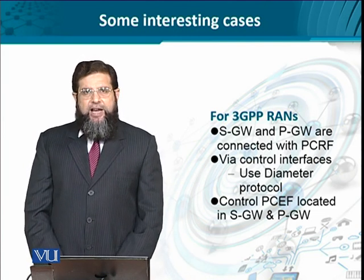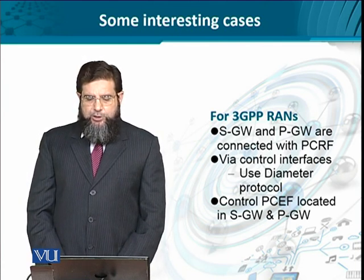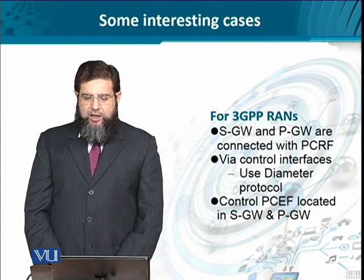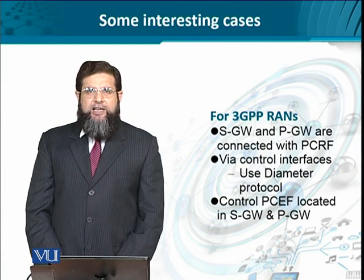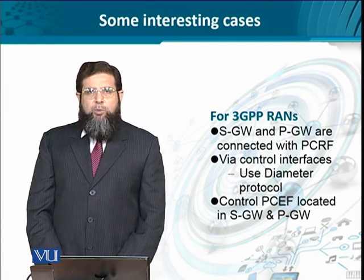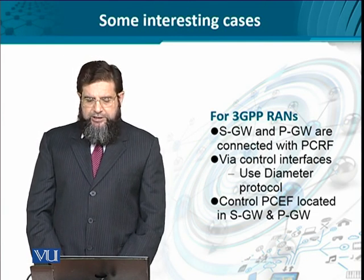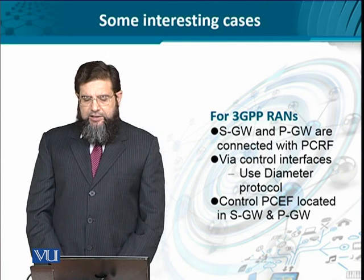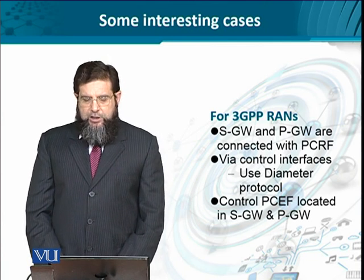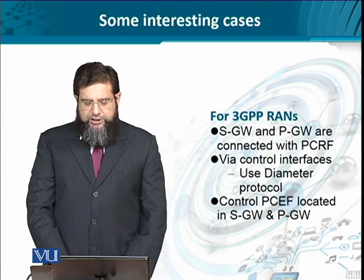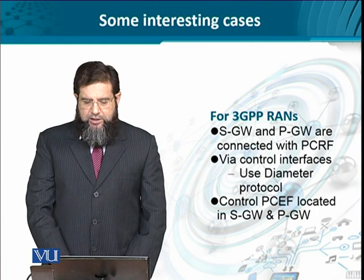The serving gateway and the packet gateway have their own responsibilities with regards to QoS implementation and with regards to charging and policy rule functions. One was at the packet level; the other was at the service level. These two gateways are also connected through the policy and charging rule function implementation. The control interfaces allowing QoS and charging implementation through the policy enforcement points — the serving gateway and the packet gateway — use the diameter protocol.